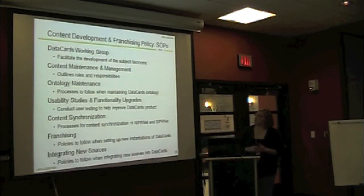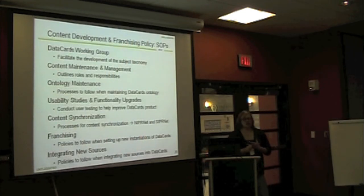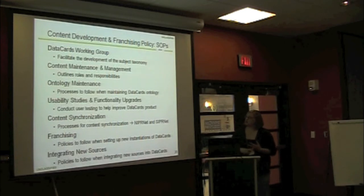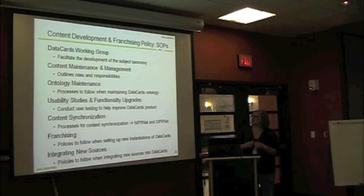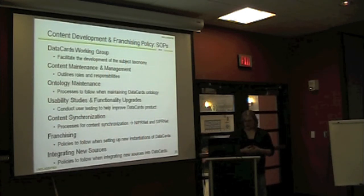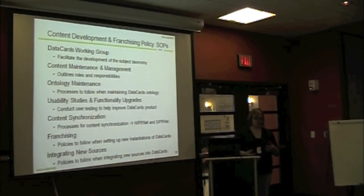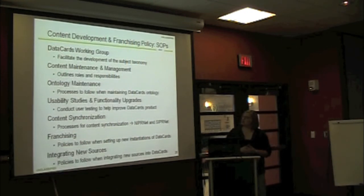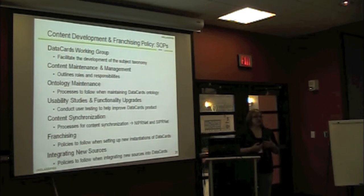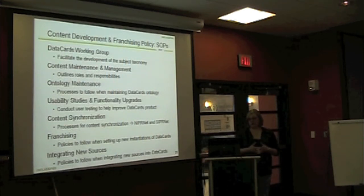And here are just a couple of the main areas that we covered in our standard operating procedures: the data card working group that was facilitating the development of the subject taxonomy, content management and maintenance, who would be responsible for doing the further maintenance and management of that, ontology maintenance. As this progressed, we wanted to know how to add and drop different terms, what our policies and procedures were going to be for that, as well as performing usability studies and functionality upgrades. As the SMW features progress and new features come out, we may want to upgrade and change things. How are we going to go about doing that? So we had to outline that.